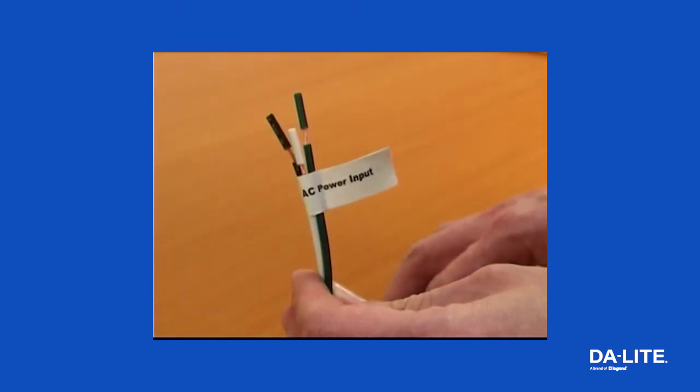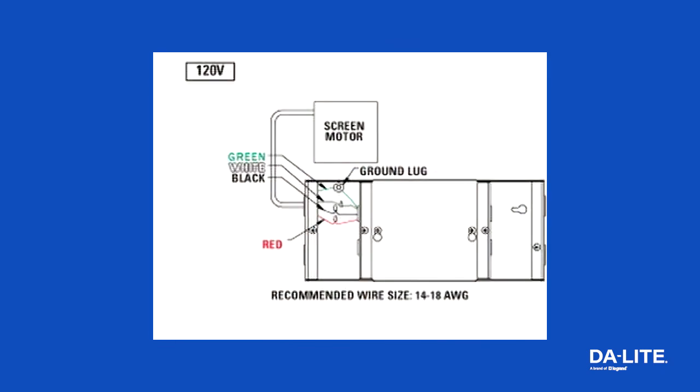Connect the power wires to the VPI wires labeled AC power input. Connect the building ground wire to the ground lug on the metal housing.